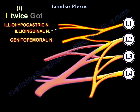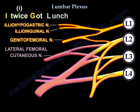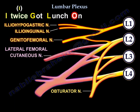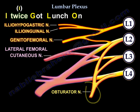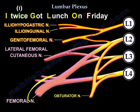'Got' — G is for the genitofemoral nerve. 'Lunch' — L is for the lateral femoral cutaneous nerve. 'On' — O is for the obturator nerve. 'Friday' — F is for the femoral nerve.